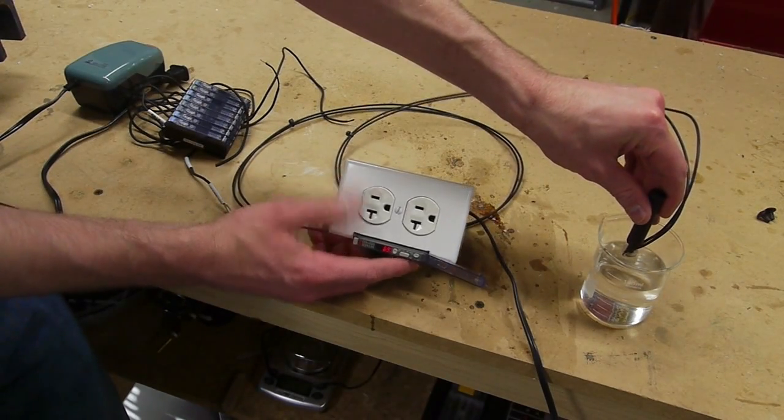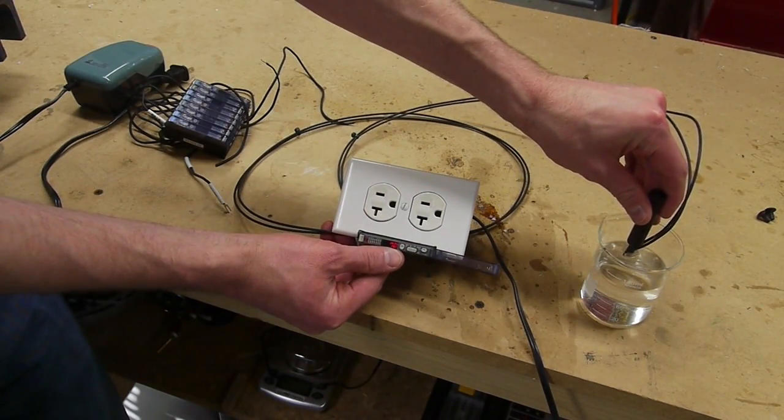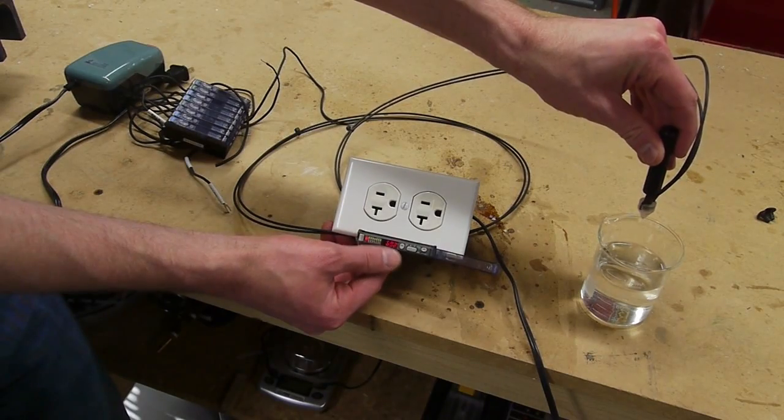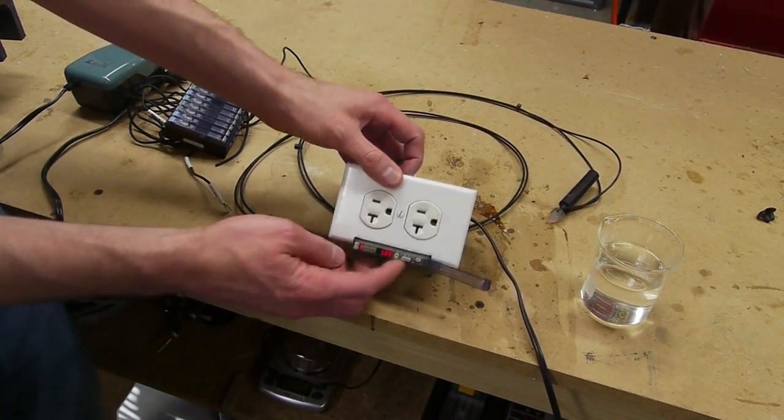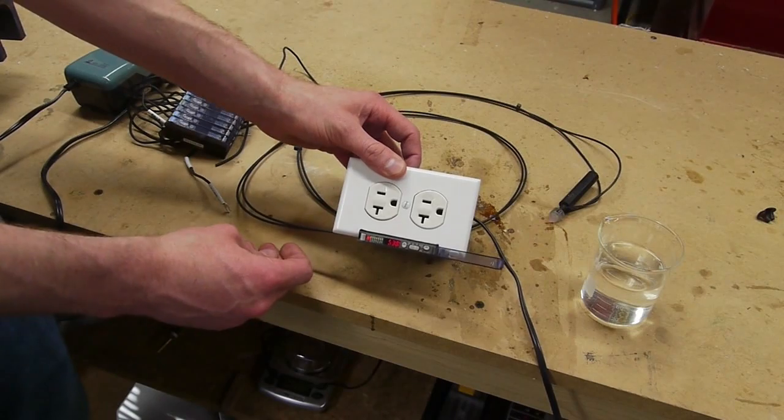So when the probe is in water, a low amount of light is coming back. And when the probe is out of water, much more light comes back. And then this thing uses the difference to decide whether to throw a switch or not.